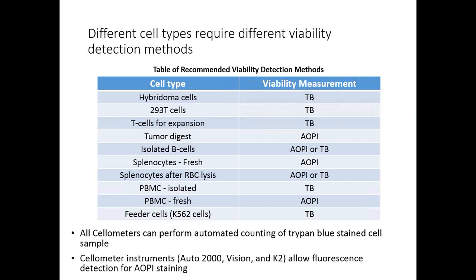Different cell types require different viability detection methods. For very clean samples such as T cells for expansion, HEK-293, or feeder cells like K562, trypan blue can be used. For mixed populations or complex samples such as tumor digest, fresh splenocytes, splenocytes after RBC lysis, fresh PBMC, or PBMC, AO/PI staining is recommended to specifically label nucleated cells. All cellometer instruments can perform automated counting of trypan blue stained cells in bright field, while the Auto 2000, Vision, and K2 models also allow fluorescence detection of AO/PI stained cells.